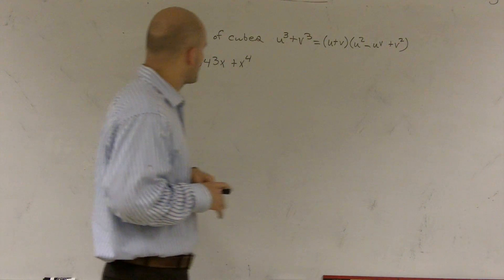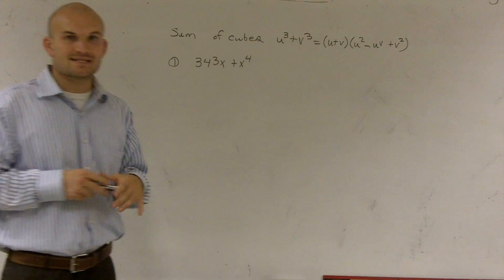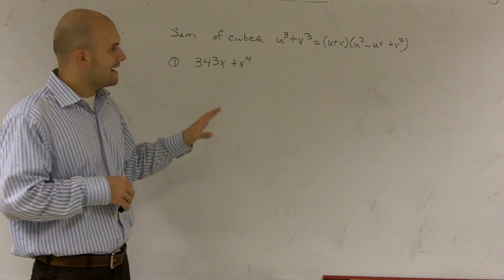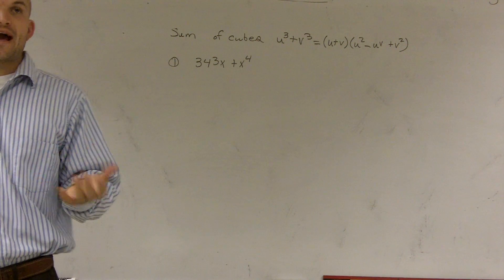So we have a problem of 343x plus x to the fourth power, and it asks us to use the sum of cubes to factor.